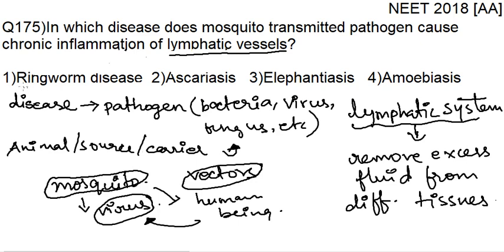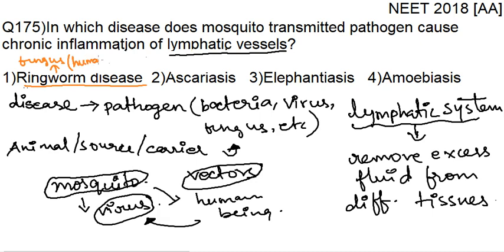Let's discuss the first option: ringworm disease. Ringworm disease is caused due to a fungus — it is basically a fungal infection. The infection occurs because of human-to-human contact; it is a contagious, communicable disease that spreads due to human-to-human contact, not due to mosquito biting. So the first option cannot be the answer.